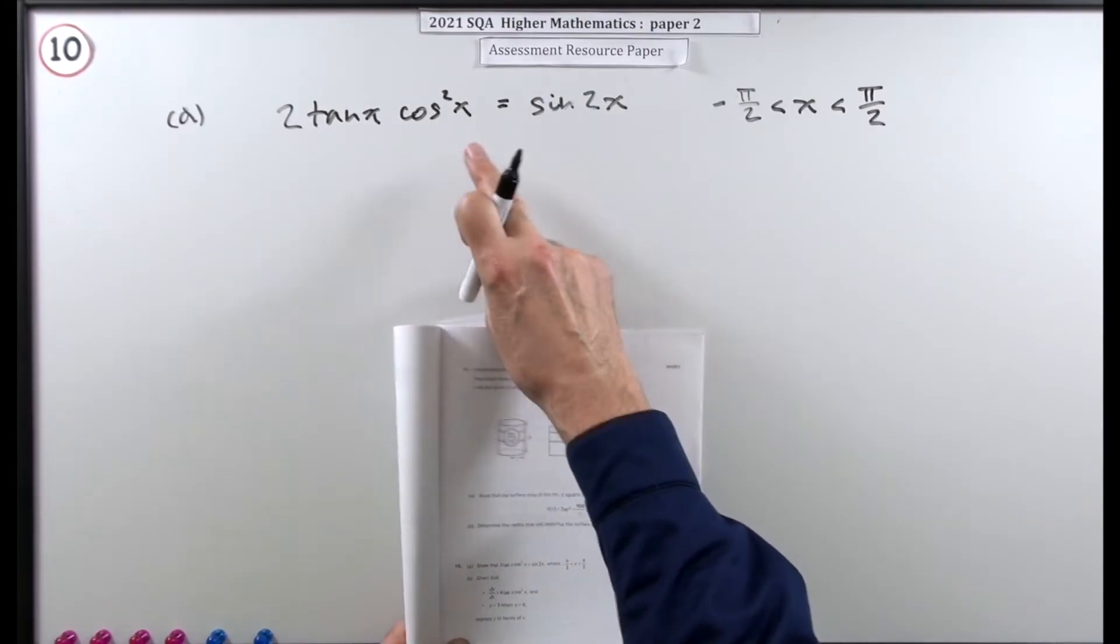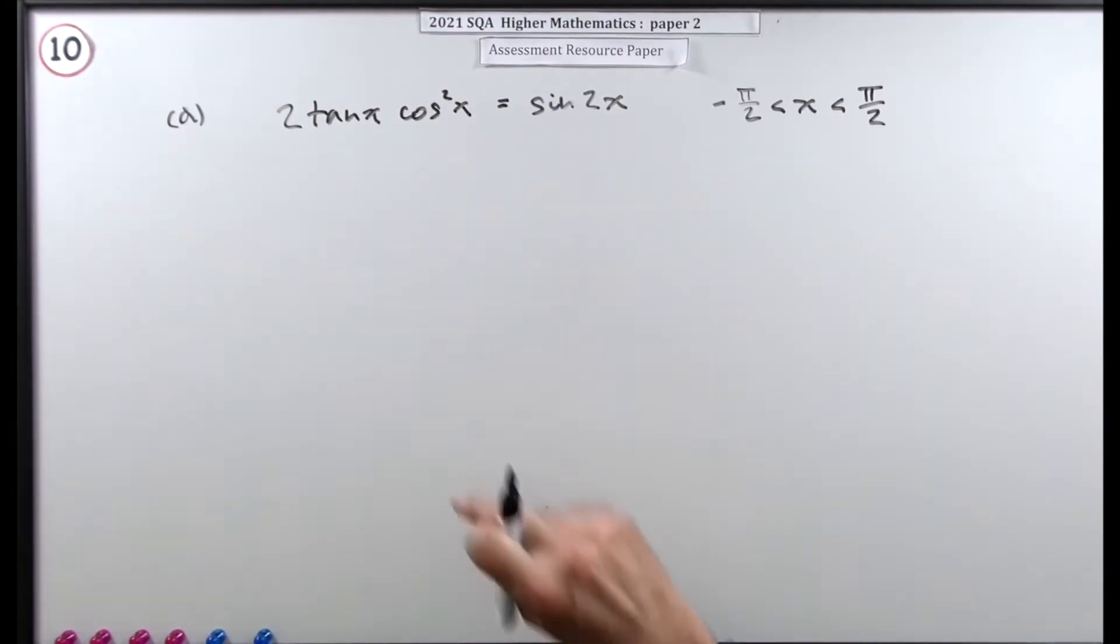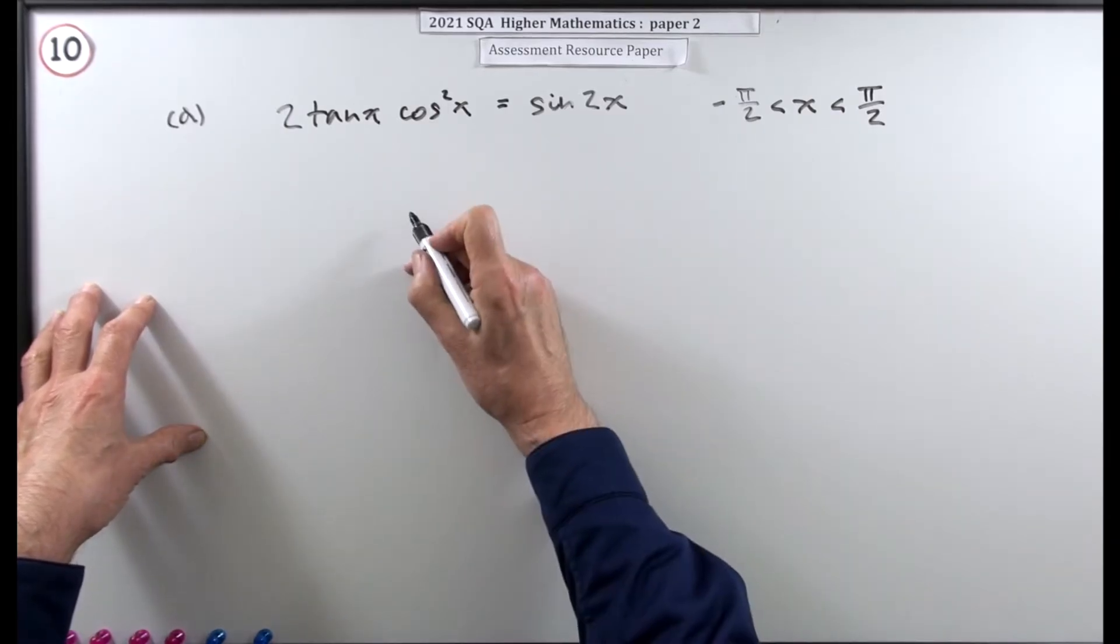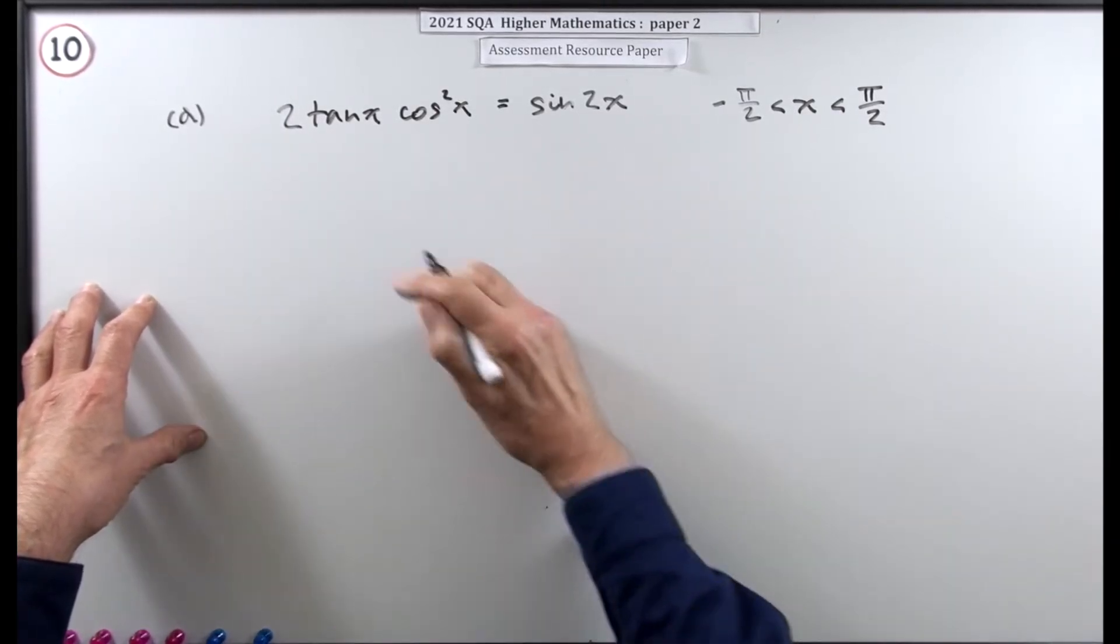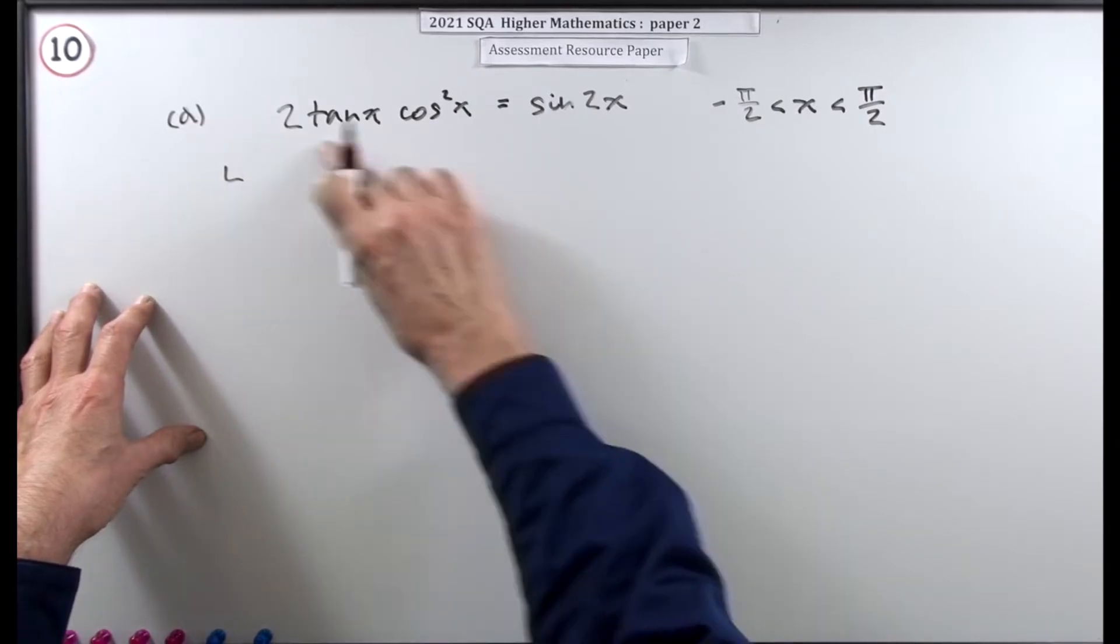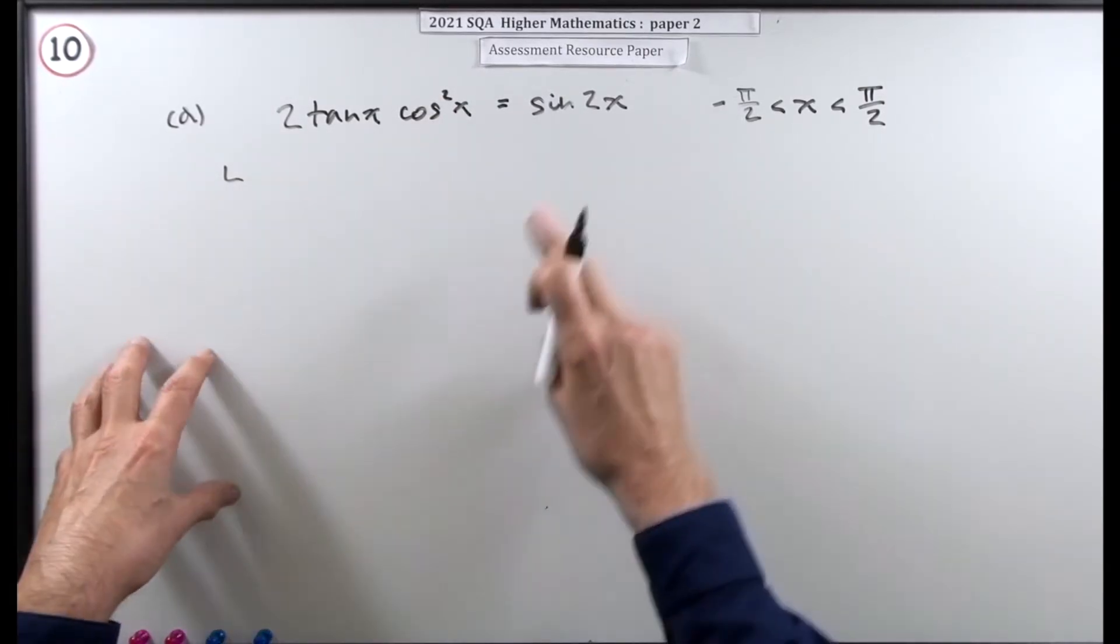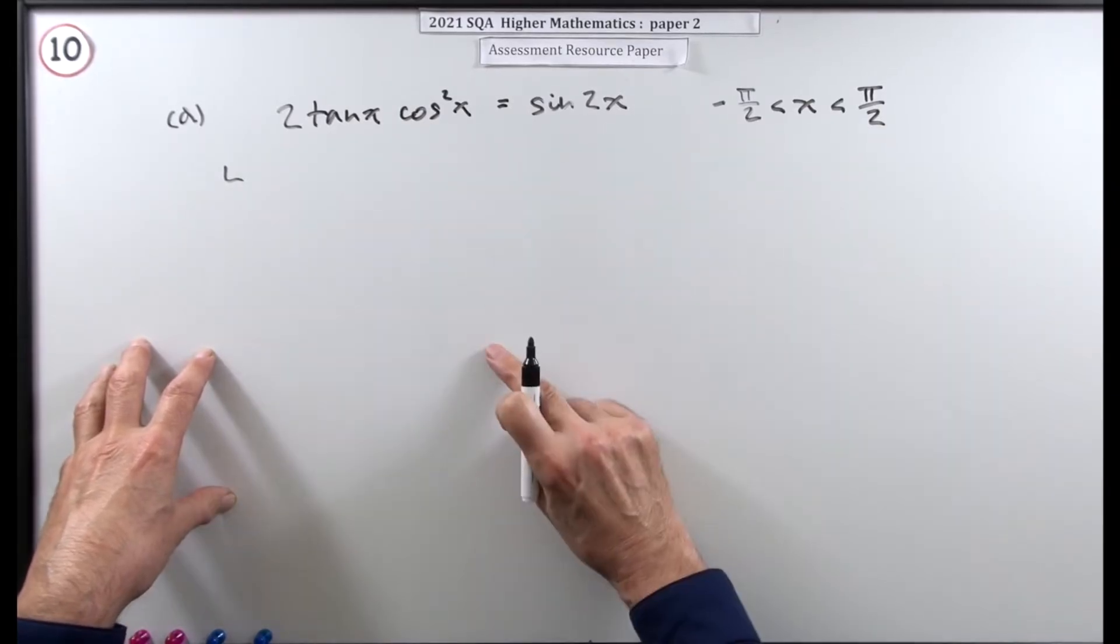Demonstrate that identity. Now that's not an equation to be solved for a particular value of x. This is true for all values of x in the range that's given there. The way that you deal with that is the standard way is you start with the side that looks clumsiest and then you try to make it end up looking identical to the other side.